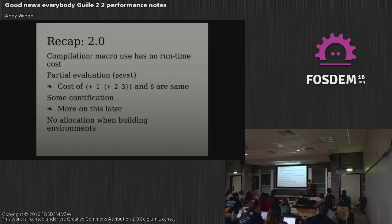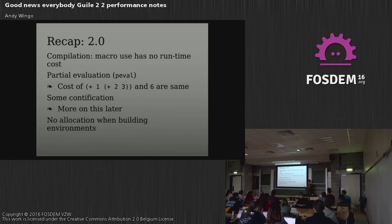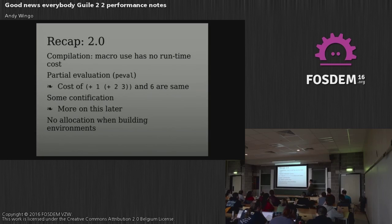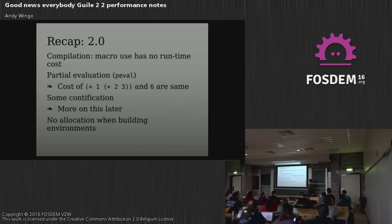That was because Guile 1.8 had a pretty simple interpreter. In the switch to Guile 2.0, we got a compiler, which not only made syntax free — the idea that macro expansion is a runtime cost was a pretty terrible thing that crimped how we made our programs in Guile 1.8. Also we had more of an optimizer, and the biggest part of optimization in Guile 2.0 is partial evaluation — P-eval. Some reductions that can be done at compile time are done at compile time, so the cost of those two expressions is the same.